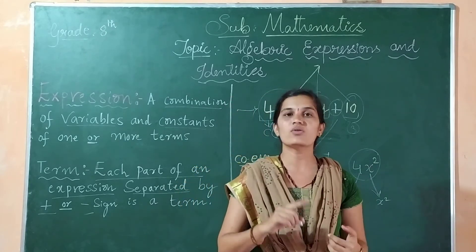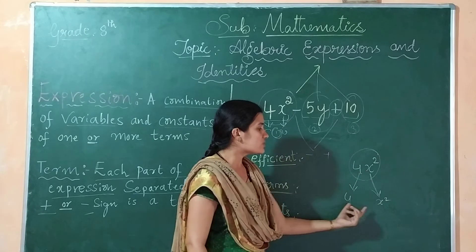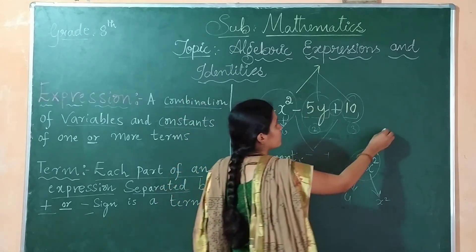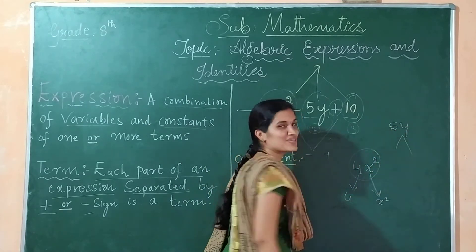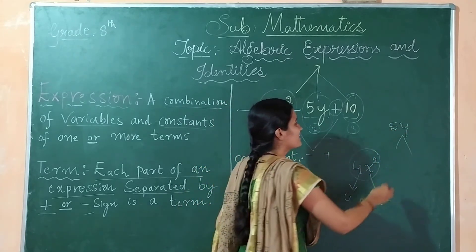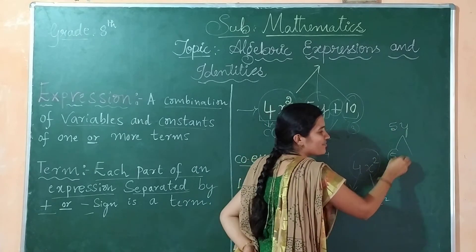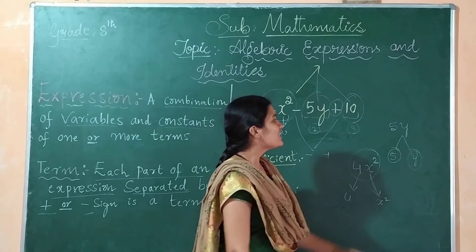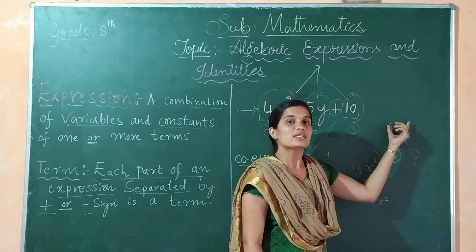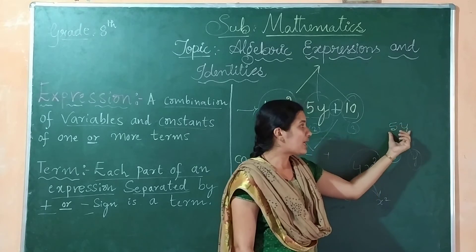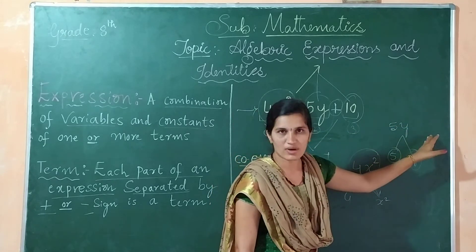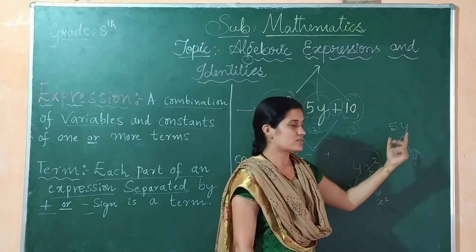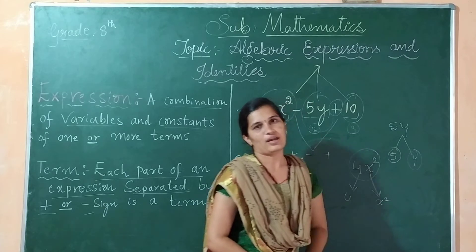Tell me, which are the factors present in 5y? 5 is one factor and y is the other factor. In 5y, this is one term and this term is formed by multiplication of 5 and y — the product of 5 and y. So two factors are present in 5y: 5 is one factor and y is another factor.